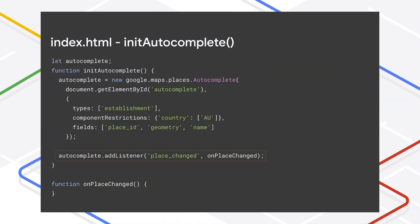That's the first half of autocomplete. Now we need to handle what happens when the user selects one of the predictions. In that same callback function, add a listener to the autocomplete service for an event called place_changed, and create a new function to define what should happen when a prediction is clicked.